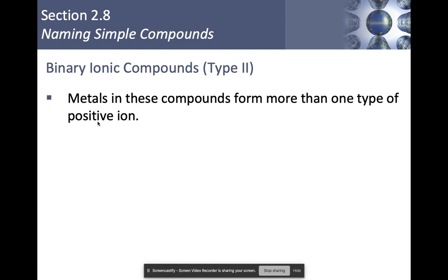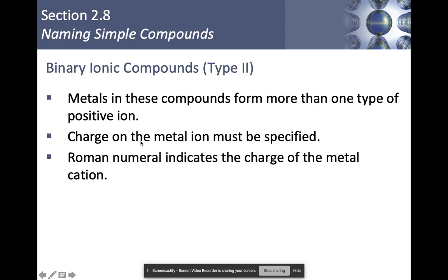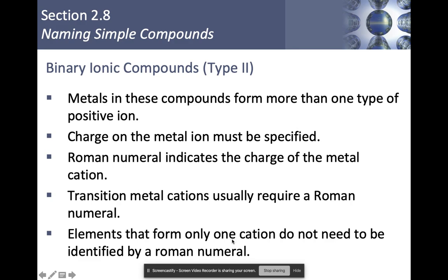Metals in type 2 can form more than one positive ion, so we have to point out what the charge on the metal is. Those are our transition metals. Roman numerals are what we use to indicate the charge of the metal on your cation. Transition metals usually require a Roman numeral. There are exceptions to that. The exceptions are going to be zinc, cadmium, and silver. They don't utilize Roman numerals when you're naming things.